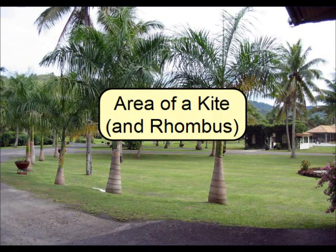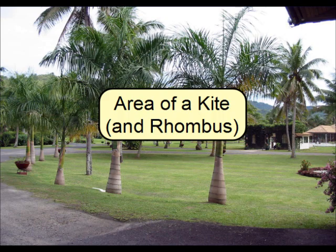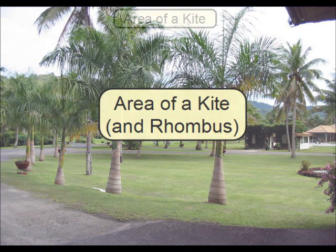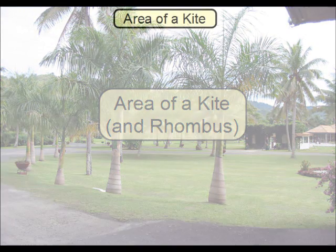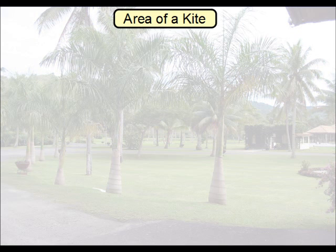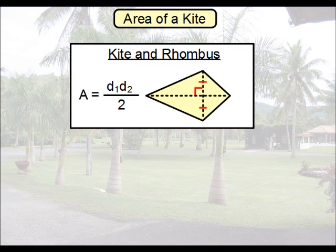Hi, this is Mr. Rees and this video is going to cover the area of a kite and also that of a rhombus. Let's just first cut to the formula here. The formula for the area of a kite is simply the product of the diagonals then divided by 2.